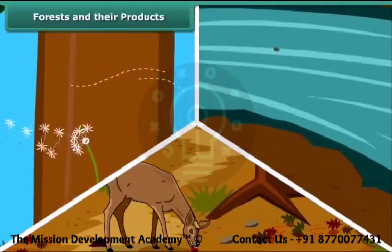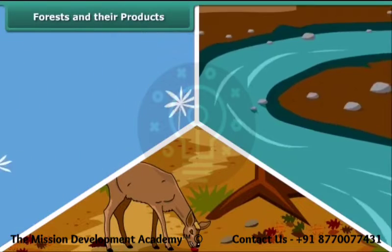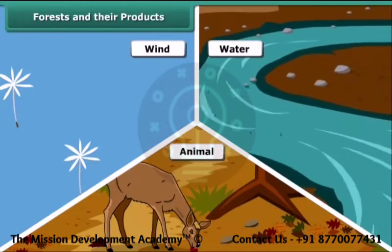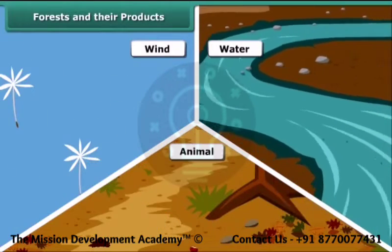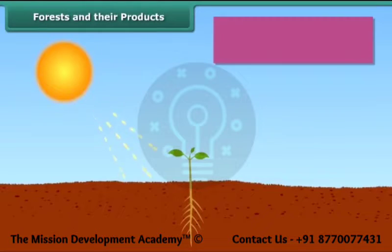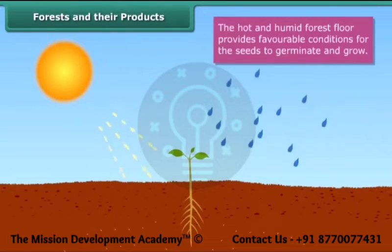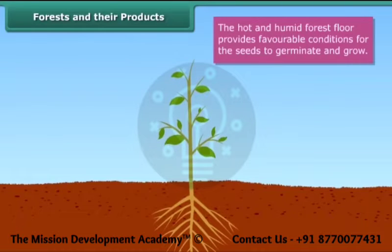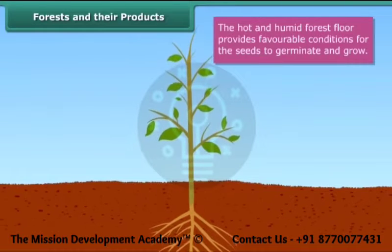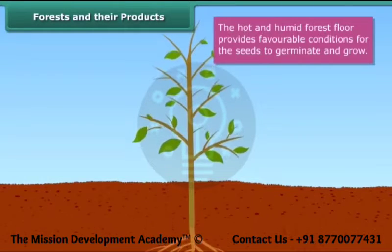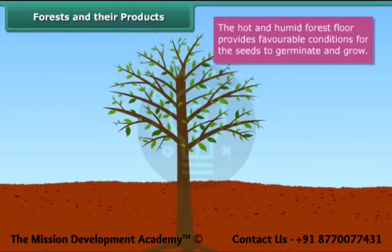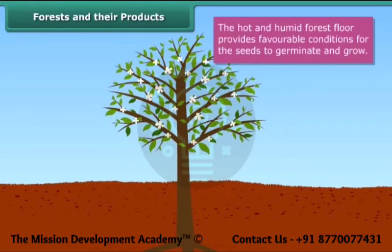Seeds produced by trees are dispersed by wind, water, and animals. The hot and humid forest floor provides favorable conditions for seeds to germinate. Seedlings emerge from germinated seeds and grow into saplings first and then trees.